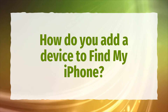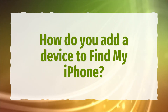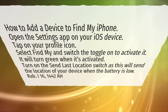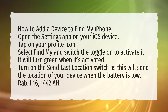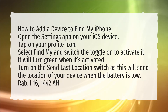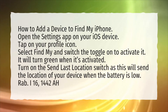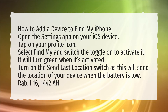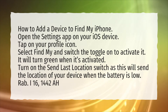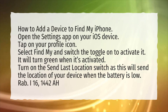How do you add a device to Find My iPhone? Open the Settings app on your iOS device. Tap on your profile icon. Select Find My and switch the toggle on to activate it.